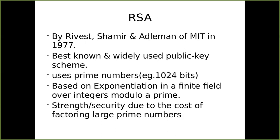RSA was developed at MIT labs in 1977 and is one of the best known and widely used public key cryptographic systems. It uses very large prime numbers of 1024 bits or more, and is based on exponentiation in a finite field of integers modulo a prime. The strength and security of the algorithm comes from the fact that the cost of factoring large prime numbers is extremely high — even if an attacker gets hold of the information, it would take a very long time to find the two prime numbers and decrypt the message.